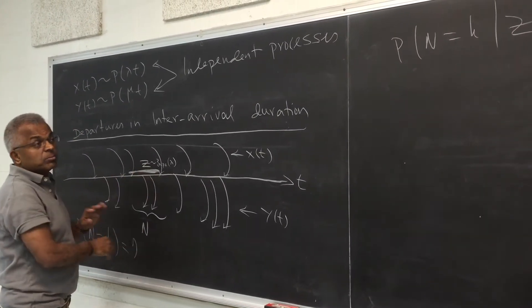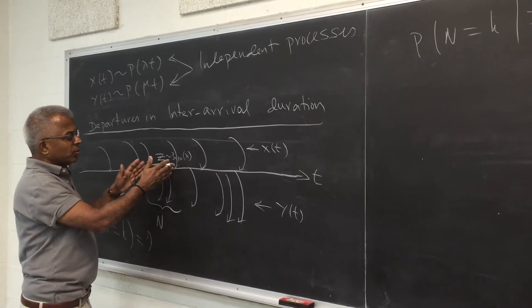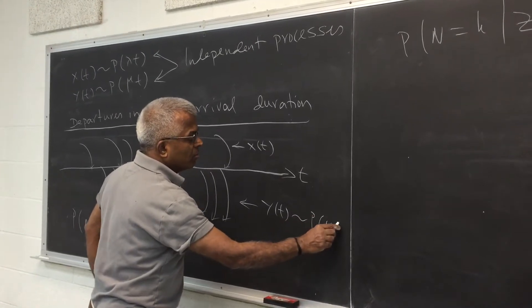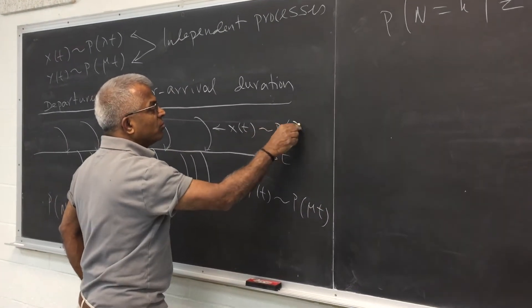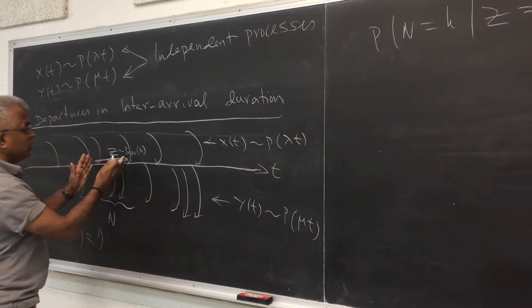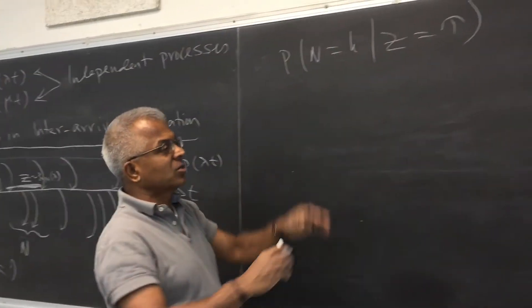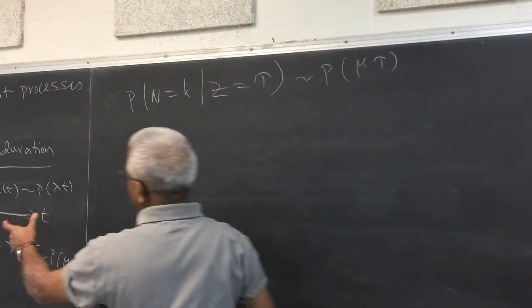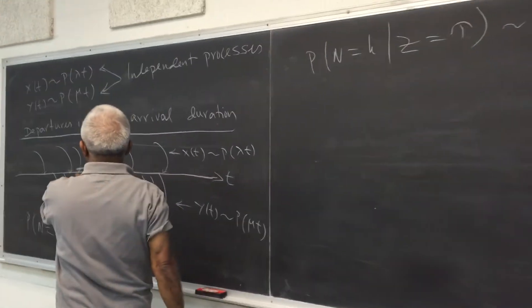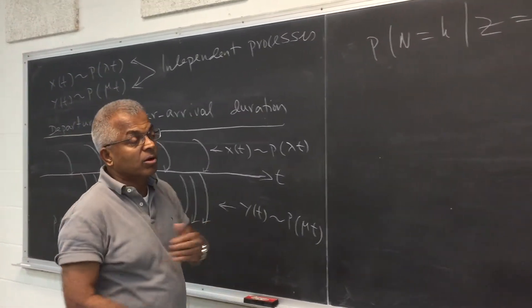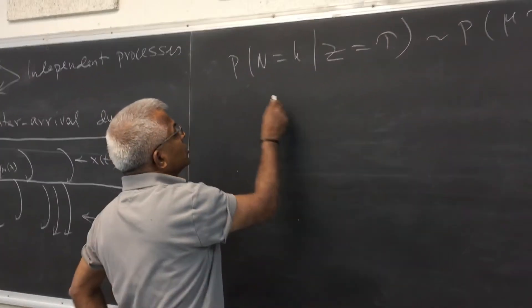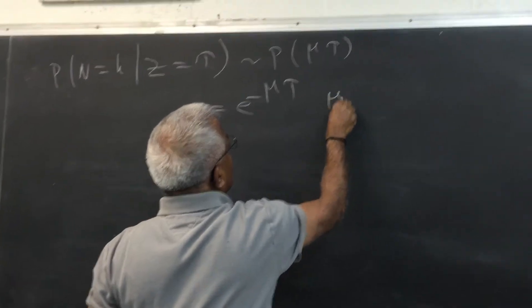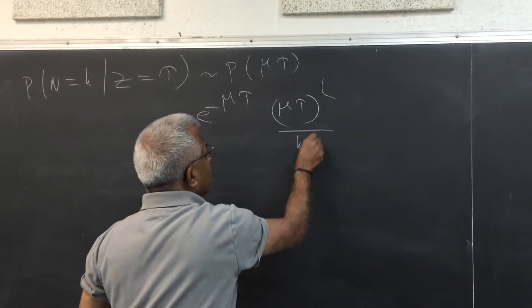So of course if you fix this to be tau, then the problem becomes extremely simple. Because over any duration, y of t is Poisson with the parameter mu t. This is Poisson with lambda t. Of course t is the duration. So this is actually going to behave like a Poisson random variable with parameter mu tau. Because z is fixed to be tau. And we are looking at the n on the output process. So this probability is actually e raised to minus mu tau, mu tau to the power k over k factorial.